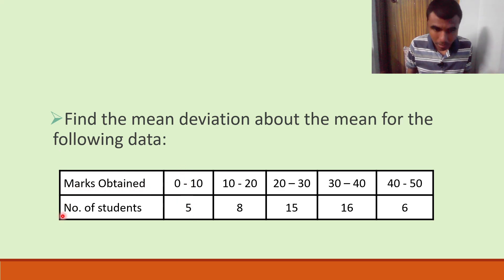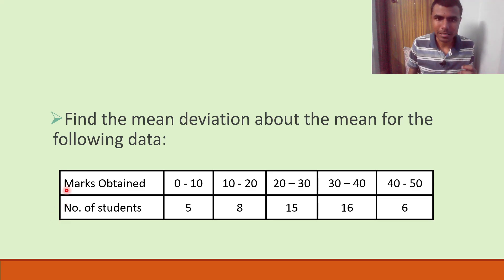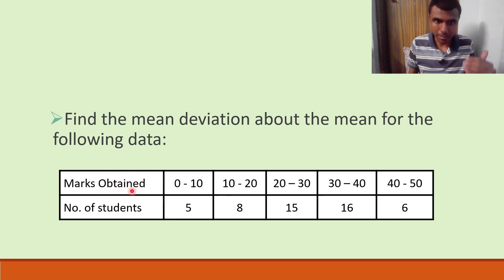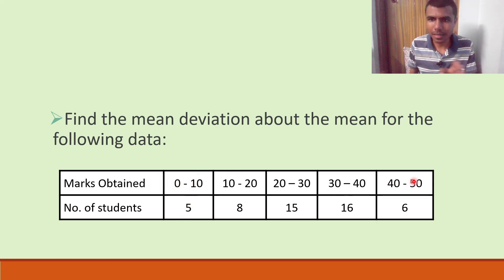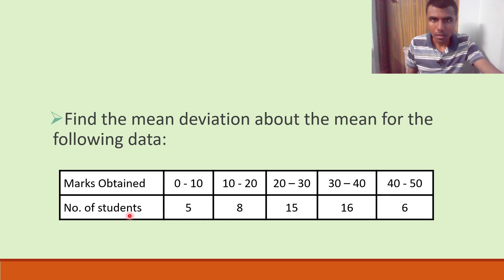Now how to solve this — there is something known as a class interval. This interval is given, which is basically our class interval, and this is frequency. Marks is a range: 0 to 10, 10 to 20 — those are ranges like intervals. How many students got that would be the frequency. These are the class intervals and these are the frequencies.